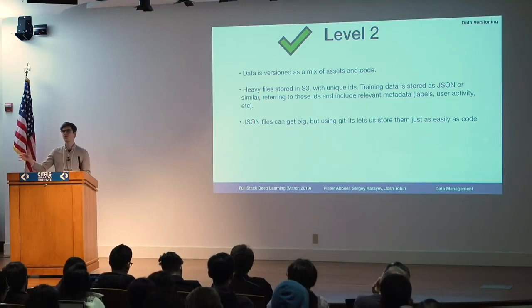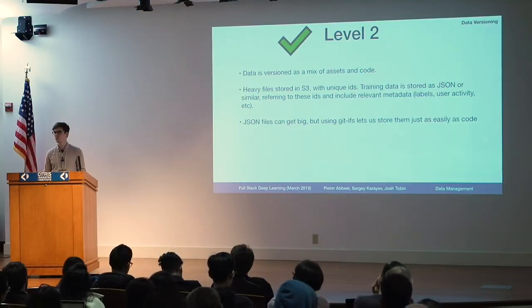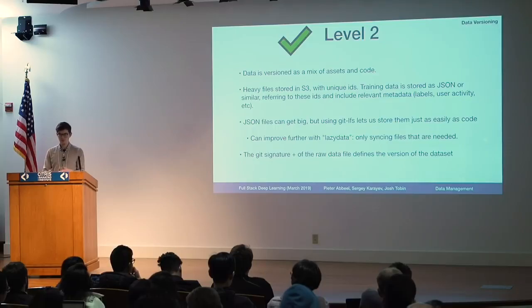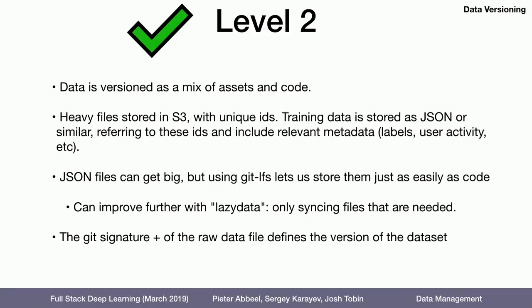There's a whole lab about versioning data tomorrow, so I'll be talking more about this then. If you do this approach, the version of the dataset is uniquely defined by the Git signature of the codebase and the raw data file. And that raw data file points to some larger objects stored in S3 somewhere.